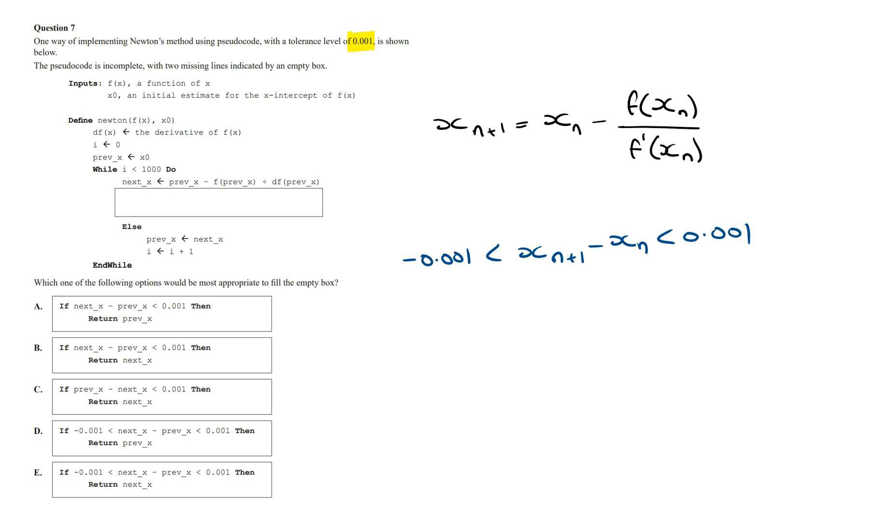By considering both positive and the negative values, this algorithm can accurately determine when the difference between the two estimates is going to be within the specified tolerance level and stop going through the while loop.